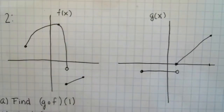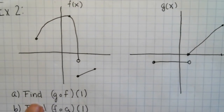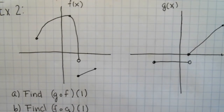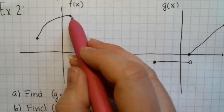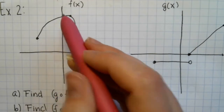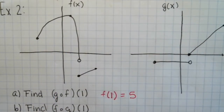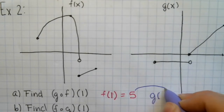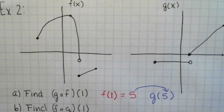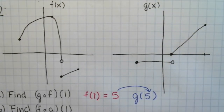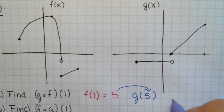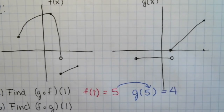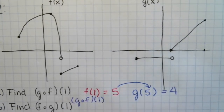Let's look at how to do that with a graph. We have two graphs: a graph of f(x) and a graph of g(x). First, I want g composed with f of 1. The first step is to plug 1 into the closer function f, so I'm looking for f of 1. Looking at the graph, f of 1 is at y equals 5. Then I take that answer and plug it into g: g of 5, looking at the graph, the y value is 4. So g composed with f of 1 equals 4.